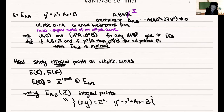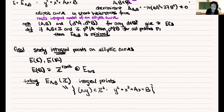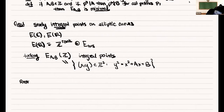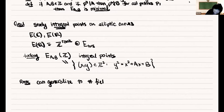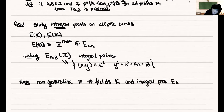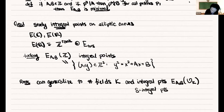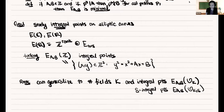We can generalize a lot of what I'm going to say to number fields and integral points in number fields: E(A,B) of O_K, where O_K is the ring of integers of K. You can generalize further to S-integral points, where S is a finite set of primes — E(A,B) of O_{K,S}. Pretty much everything I say can be generalized to these cases.